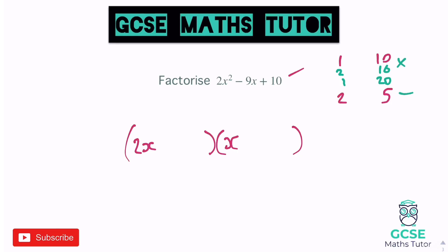So it's going to have to be the 2 and the 5. We need to be careful because we've got negative 9 in the middle — we're trying to make negative 9. Doubling one of them: we could have 4 and 5, or 2 and 10. It's going to have to be 4 and 5 — we can make 9 out of that. We've also got positive 10 at the end, so both numbers must be negative: negative 4 and negative 5. So the 2 goes in the bracket that gets doubled, giving negative 2 on the right side, and negative 5 in the left bracket.